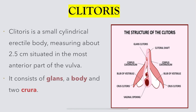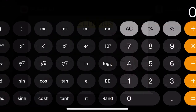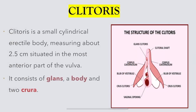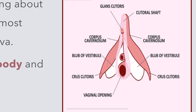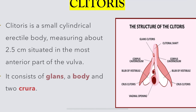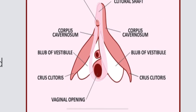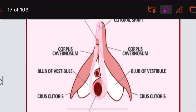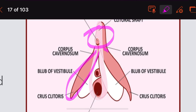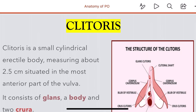Moving on to the clitoris. It is a small cylindrical erectile body measuring about 2.5 centimeters, situated in the most anterior part of the vulva. It contains a glans, a body, and two crura.